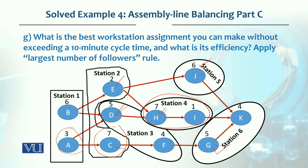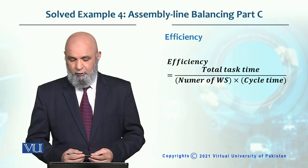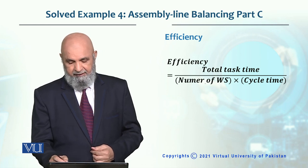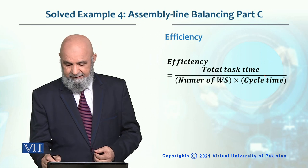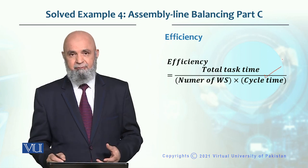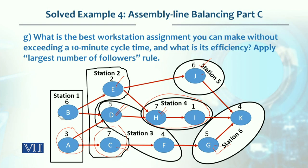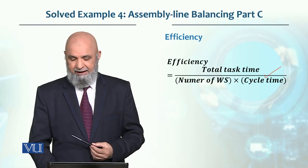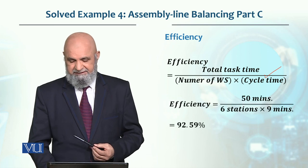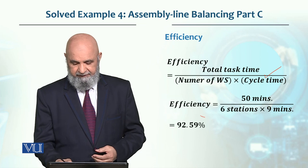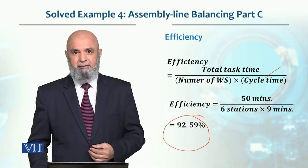This completes the assignment of tasks to workstations. If we calculate efficiency now, total task time is 50 minutes and number of workstations is 6, but the cycle time has changed from 10 minutes to 9 minutes — because the maximum workstation time is 9 minutes (workstations 1, 2, and 3 are all 9 minutes). Based on this, the efficiency comes to 92.59%.